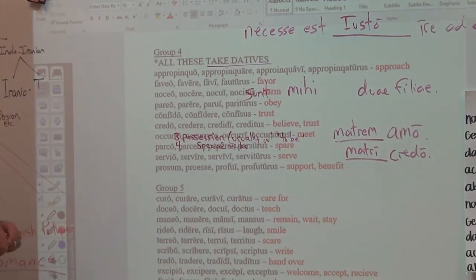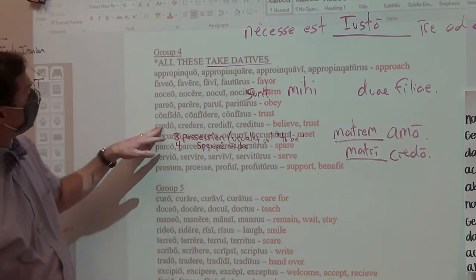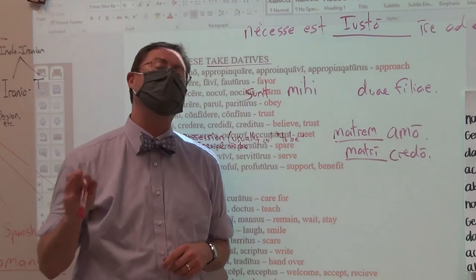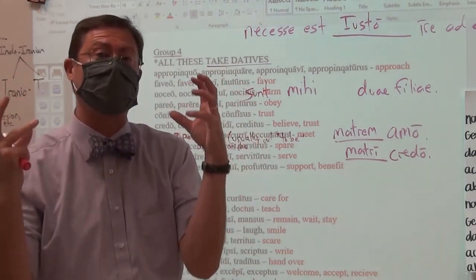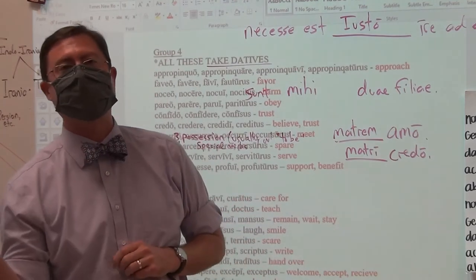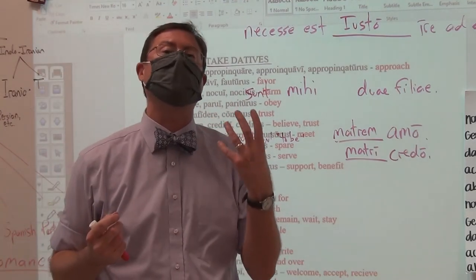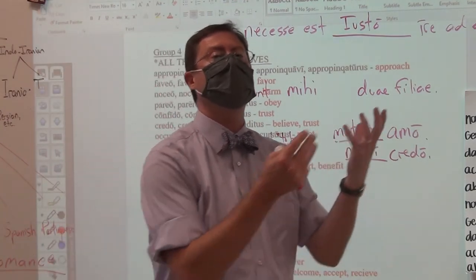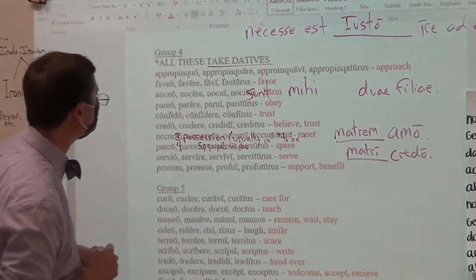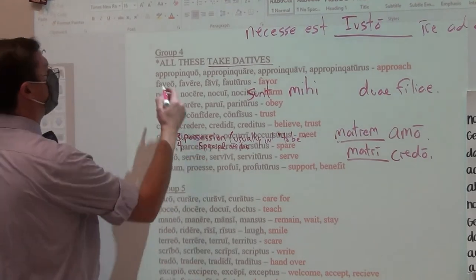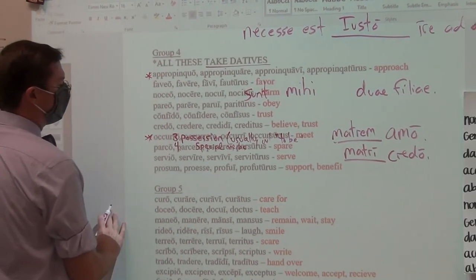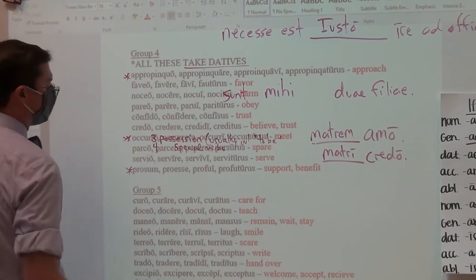Now the reason being is because if you think about it, especially concerning verbs like credo, what are you doing when you trust somebody? You are literally, di-transitively, giving trust to them. So within the verb is the di-transitive action of give and the direct object of trust and then the dative object becomes somewhat like an indirect object. Now there are three special ones that I need to pay close attention to and that is that one right there, appropinquo and that one right there, occuro and that one right there, prosum.